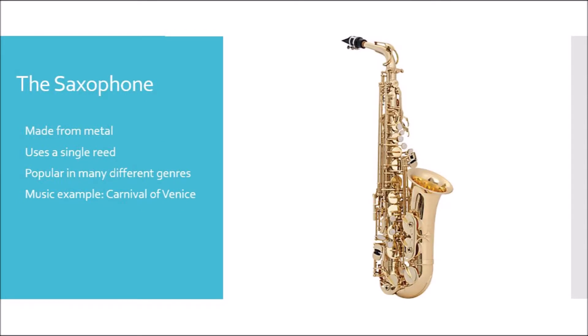The next instrument we're going to talk about is the saxophone. The saxophone is the only woodwind instrument that was originally made from metal. The saxophone uses a single reed and is very popular in many different genres, from hip-hop to jazz to classical music. The music example we're going to hear today is from the Carnival of Venice.